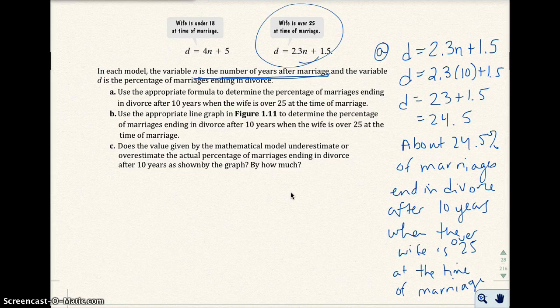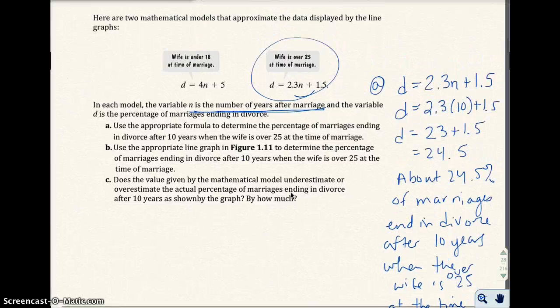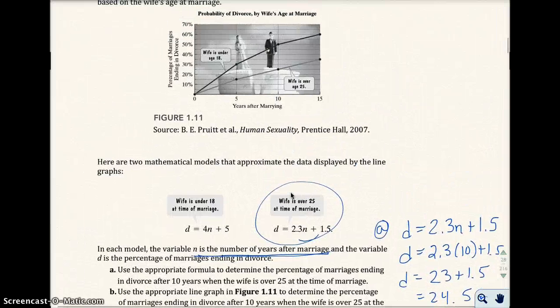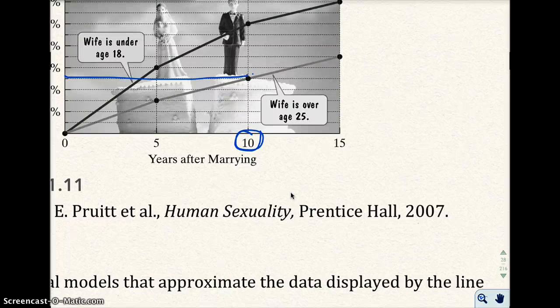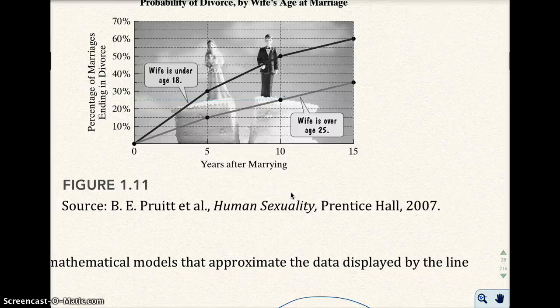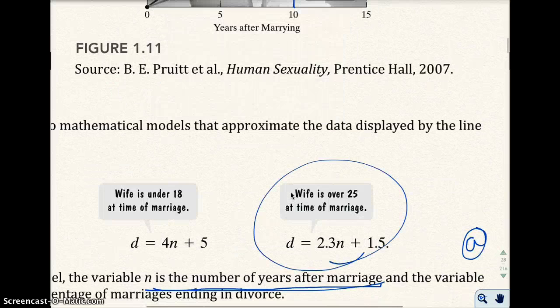Part B says use the appropriate line graph to determine if the percentage of marriages ending in divorce after 10 years when the wife is over 25. So we'll use the line graph. So let's go look at the line graph here. And after 10 years of marriage, which is right here. And we want another percentage, which will be right there. That looks like, we'll zoom in a little bit. This is where it actually meets up right there. And so if we look at that carefully, it looks like this is between 20 to 30%. So about 25%. So it looks like it's about 25%.